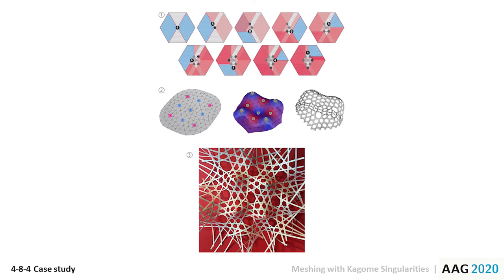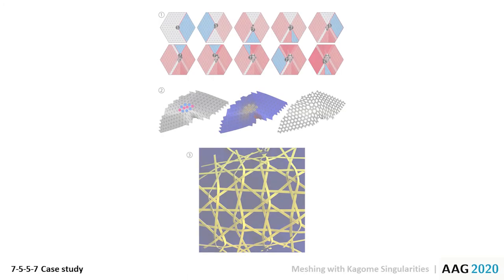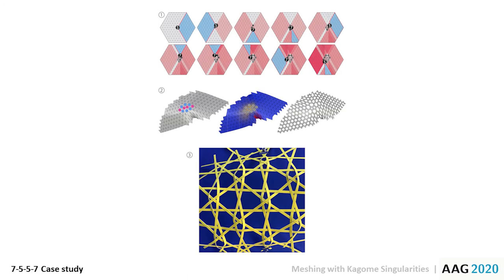The sequencing of the singularity introductions is shown at the top, the relaxation into geometry in the centre, and the physical weave for comparison is shown at the bottom. In this second case, the weave comprises an array of valence 7s and 5s.